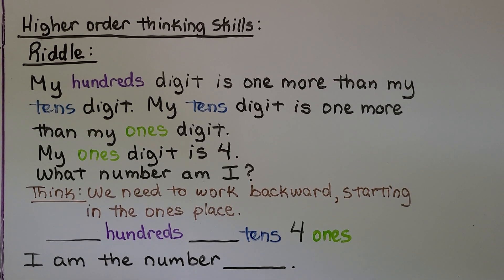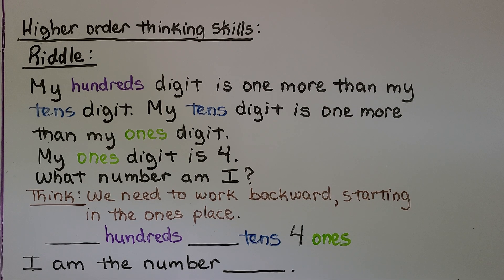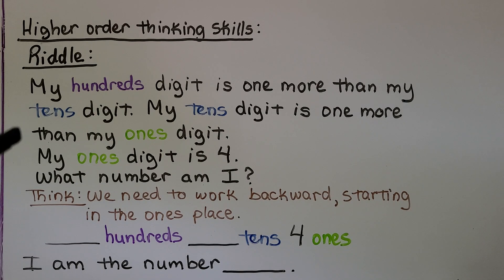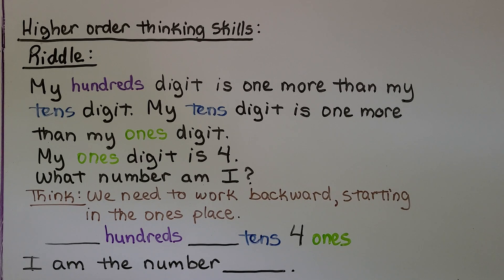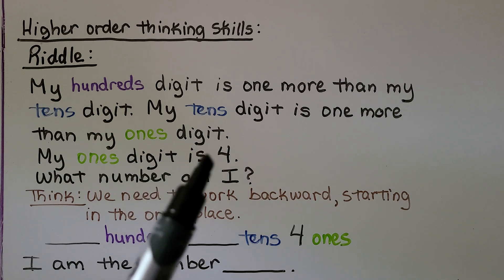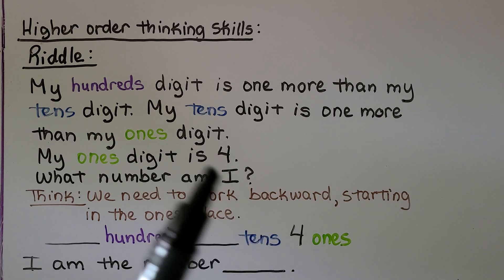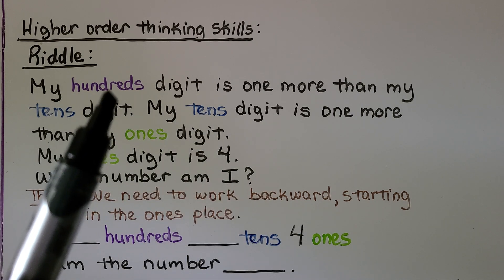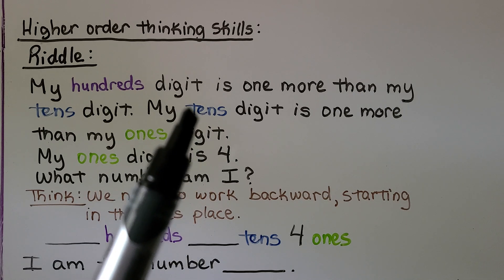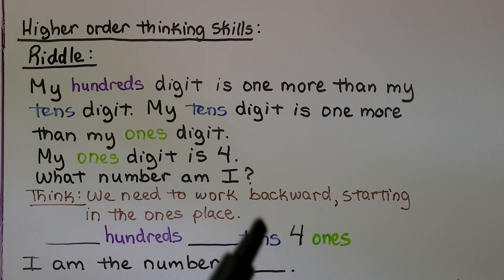Let's try some higher-order thinking skills — that means we have to think a little harder. The riddle says: my hundreds digit is one more than my tens digit; my tens digit is one more than my ones digit; my ones digit is four — what number am I? We need to work backward, starting in the ones place. It told us the ones digit is four, and the tens digit is one more than the ones digit.